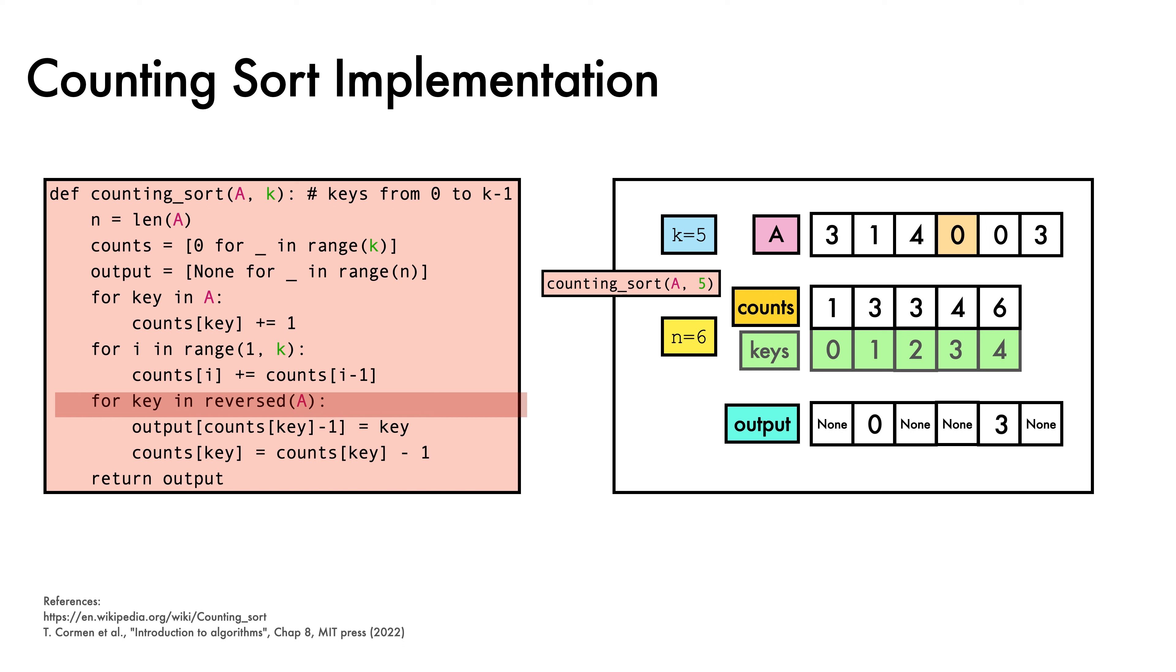This process continues, gradually making its way through each of the elements in A and inserting them into the appropriate output location, each time decrementing the corresponding value in the counts array until we've made it back to the start of A, at which point the sort is complete. We then simply return the output.